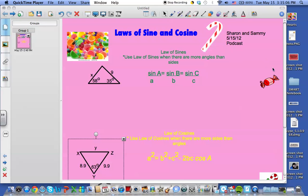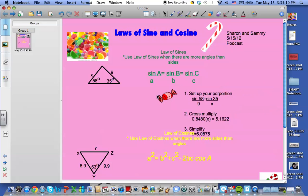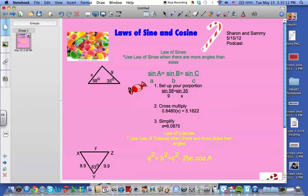So let's take on a question right here. Number one, we should set up your proportion, which would be sine 58 over 9, because the corresponding side to the angle is across from it, is equal to sine 35 over X.